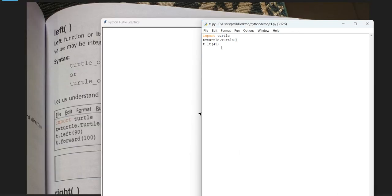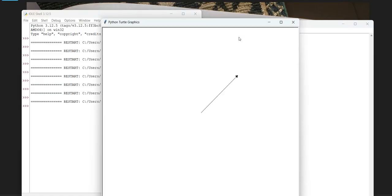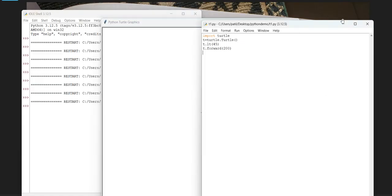To understand it better way, what we will do, we will just draw a line. Forward 200. And run this. So you will understand. This is better way. Understood. Super. So now we will cover the remaining function in the next video.